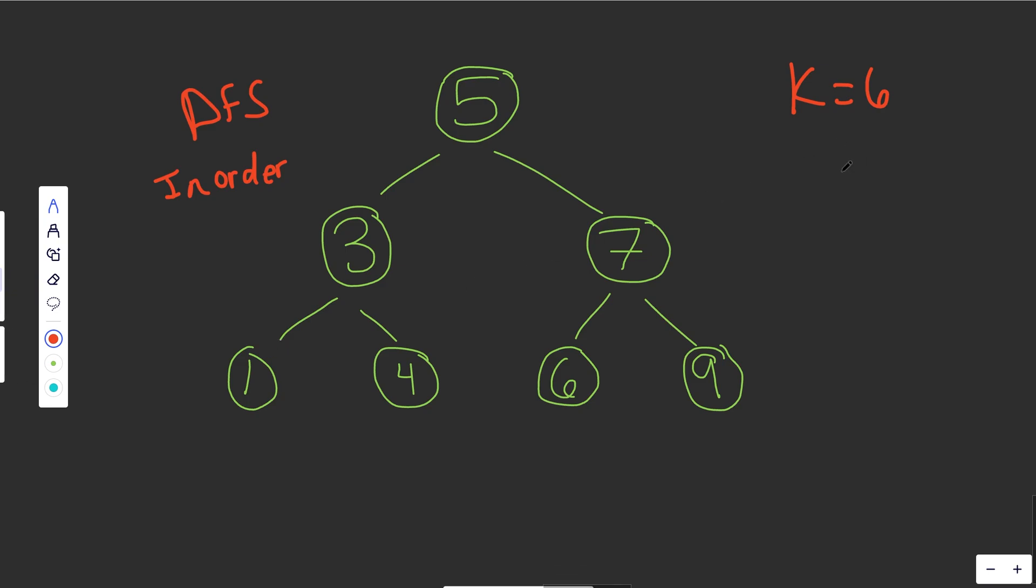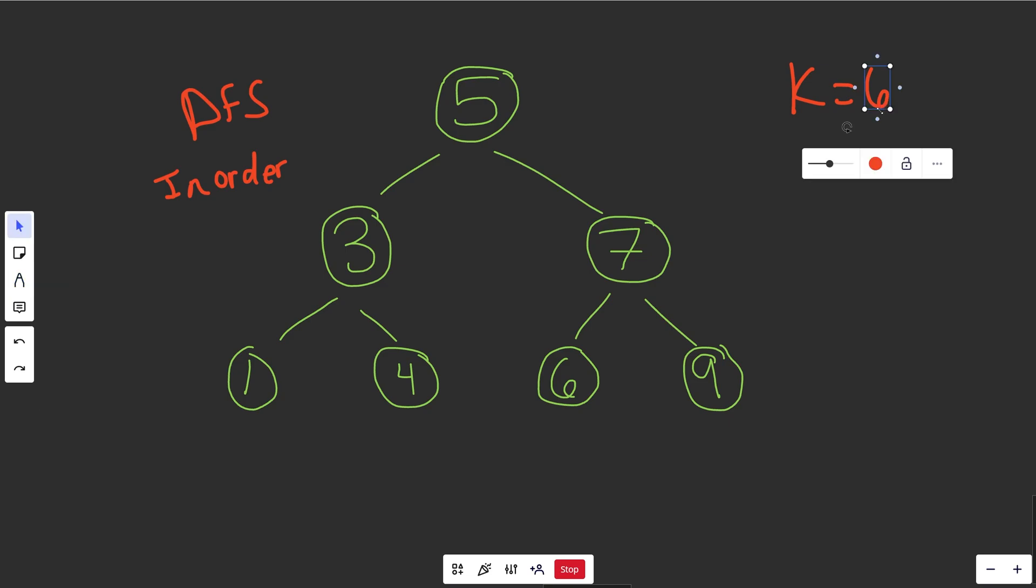No, it's not. Then what we're going to do instead is decrement k, basically getting it closer to the element we're looking for. Now we're going to go up here, and we'll say, okay, it's time to process 3. Is k equal to 1? No, it's not. We are going to decrement it, and keep this going.